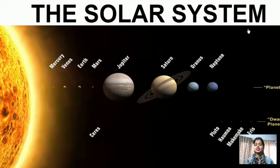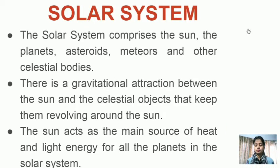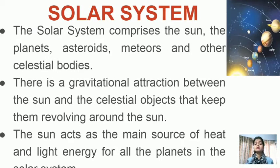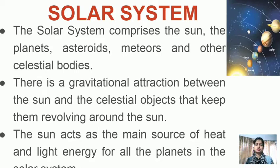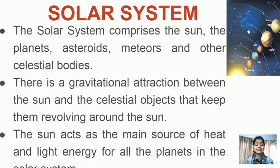In this video we are going to discuss the solar system, covering each and every component but mainly planets. The solar system comprises the Sun, planets, asteroids, meteors and other celestial bodies. They are fixed in their orbits and revolve around the Sun because of the gravitational force of attraction between the Sun and celestial bodies.